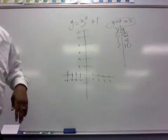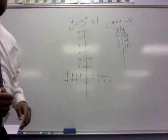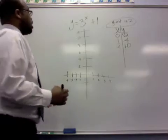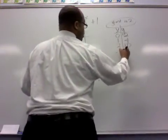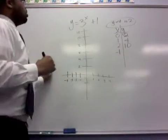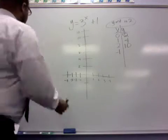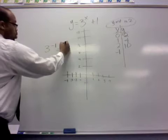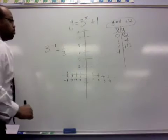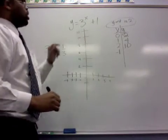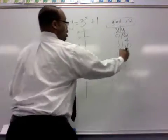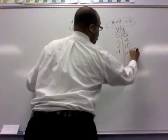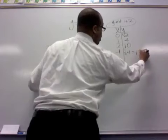We've done some positive numbers. Let's do maybe a negative number. Let's try negative 1. 3 to the negative 1 will equal 1 over 3. And then we'd have 1 over 3 plus 1. And 1 over 3 plus 1 equals 1 and 1 third.